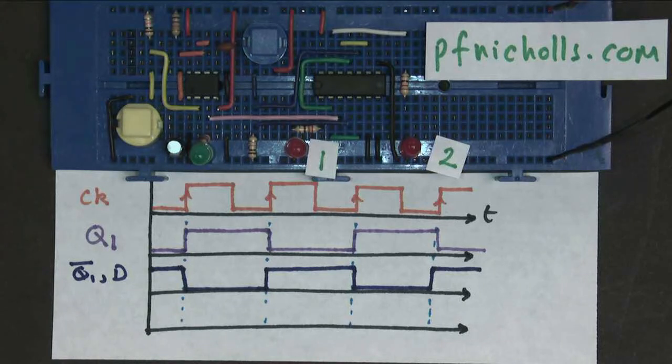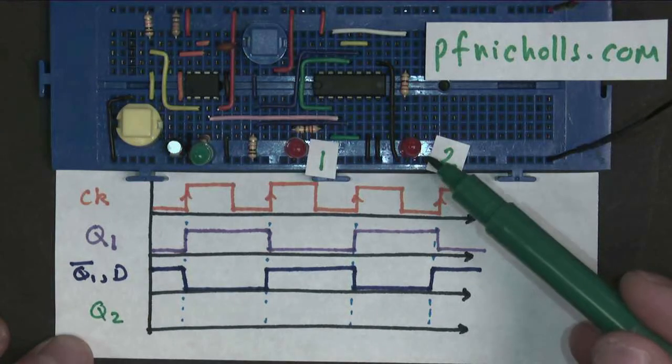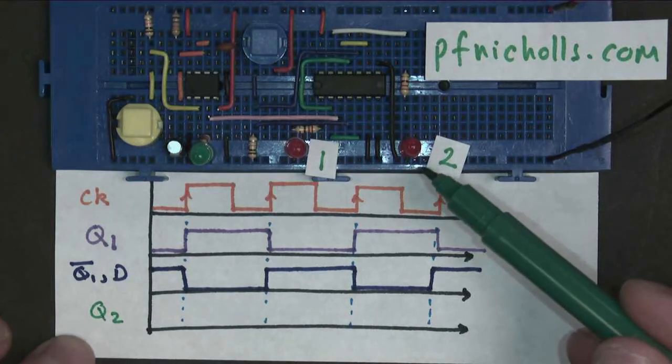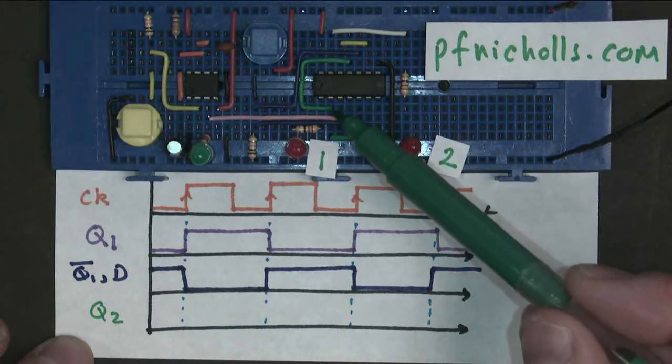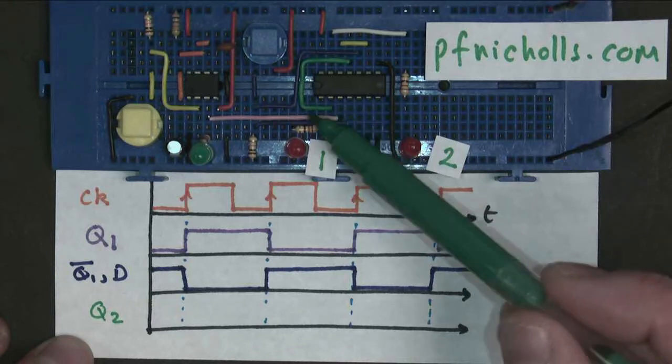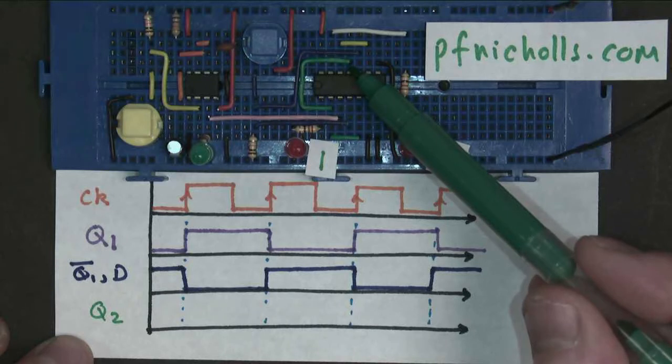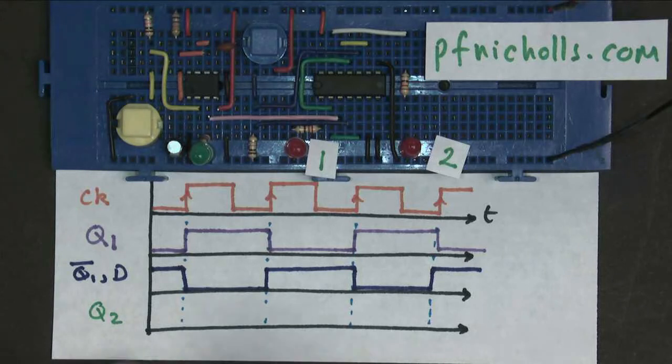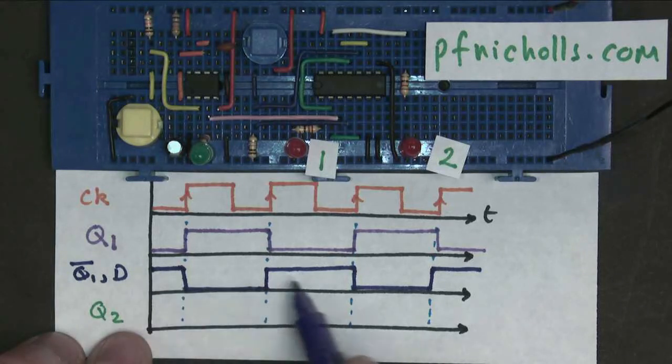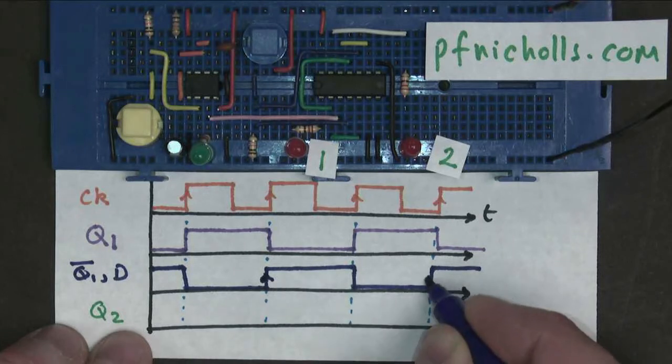Now, as our final part of our timing diagram, let's draw Q2. Now Q2 is this output here, which represents the second LED. Now if we follow the circuit round, you'll see that the Q bar output of the first counter is connected through this green wire to the clock of the second counter. So the clock of the second counter is the Q bar, this blue line here, which has a rising edge just here and a rising edge just here.